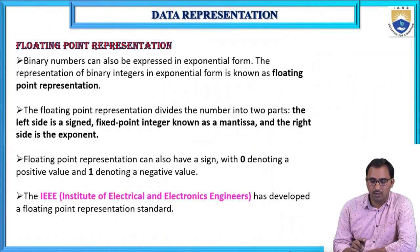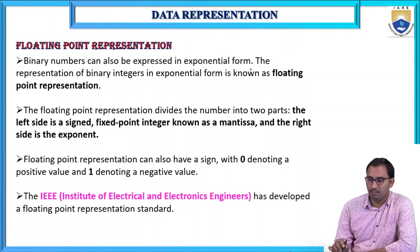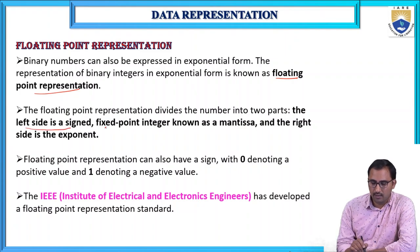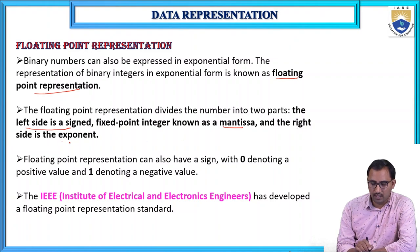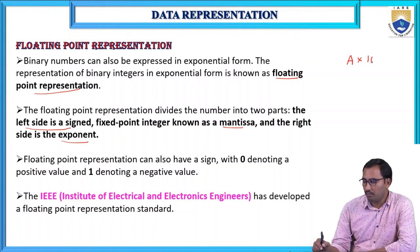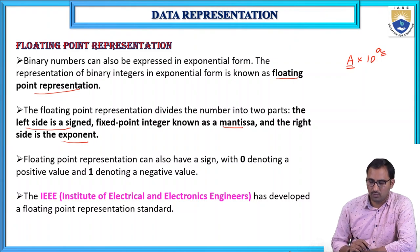Binary numbers can also be expressed in exponential form. The representation of binary registers in exponential form is known as floating point representation. The floating point representation divides the number into two parts: the left side is a signed fixed-point integer known as the mantissa, and the right side is the exponent. Any floating point number can be represented as A × 10^a, where capital A is the mantissa and small a is the exponent.